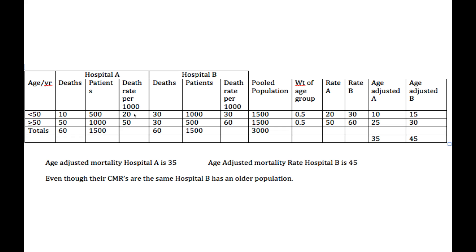The age-specific rate of 20 is here, and I take the weight of the age group times the rate for Hospital A to come up with a rate-adjusted Hospital A of 10 — so the weight of 0.5 times 20 deaths per 1,000 is 10. For Hospital B, 0.5 times 30 is 15. For the older age group, 0.5 times 50 is 25, and 0.5 times 60 is 30.